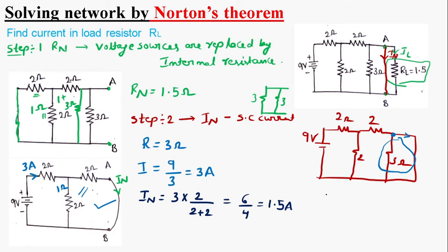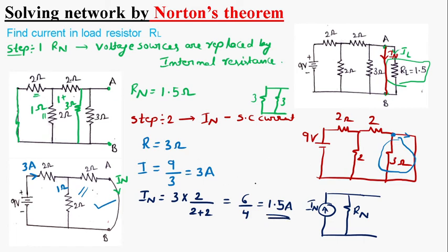With this, we can draw our Norton's equivalent circuit with a current source IN in parallel with resistance RN. IN is 1.5 amperes and RN is 1.5 ohms.